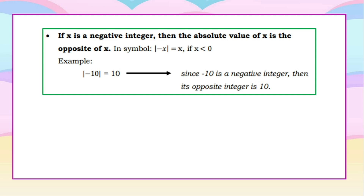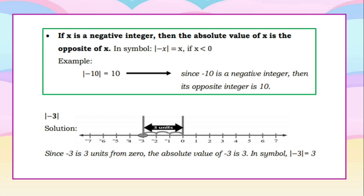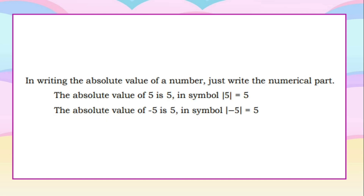To illustrate using the number line, let's find the absolute value of negative 3. Starting from 0, since it is a negative number, we move 3 units to the left and end at negative 3. Since negative 3 is 3 units from 0, the absolute value of negative 3 is 3. In writing the absolute value of a number, just write the numerical part: the absolute value of 5 is 5, and the absolute value of negative 5 is also 5.